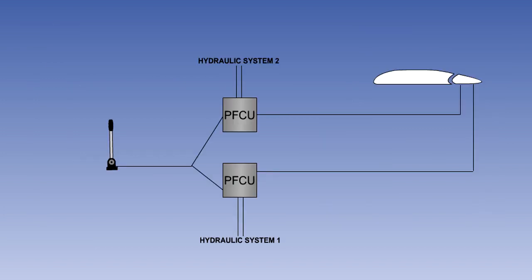When the flying controls are power operated, some form of control unit duplication is necessary to guard against hydraulic system failure. This is often accomplished by having two powered flying control units operating each flying control surface. These units will be operated by separate hydraulic systems.